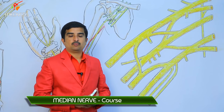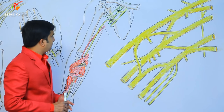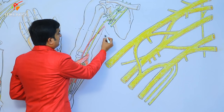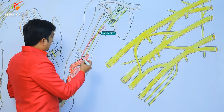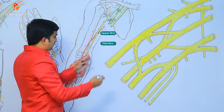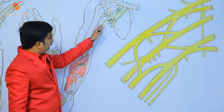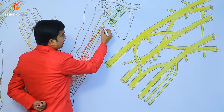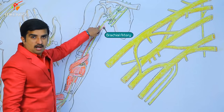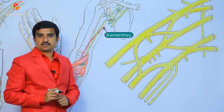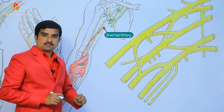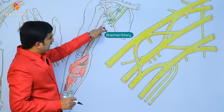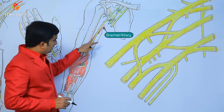Now let me explain the course of the median nerve. If we divide the arm into three compartments — upper, middle, and lower — in the proximal arm, the median nerve lies lateral to the brachial artery. By the time it reaches the middle of the arm, it crosses the brachial artery from lateral to the medial side.